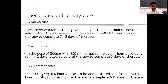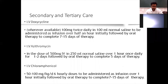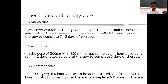At a secondary or tertiary center: IV doxycycline 100 mg twice daily in 100 ml normal saline for seven to fifteen days; or IV azithromycin 500 mg in 250 ml normal saline once daily for one to two days followed by oral therapy for five days; or IV chloramphenicol 50–100 mg per kg per day in six-hourly doses as an infusion over one hour, followed by oral therapy to complete seven to fifteen days. This is the treatment protocol for a tertiary care center.